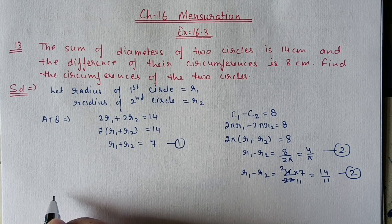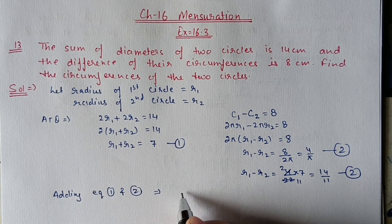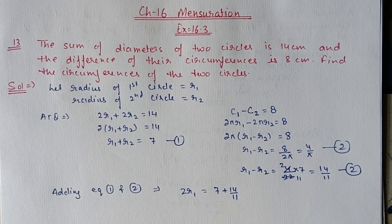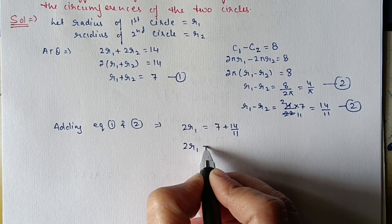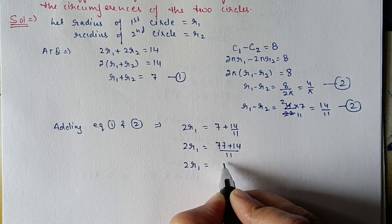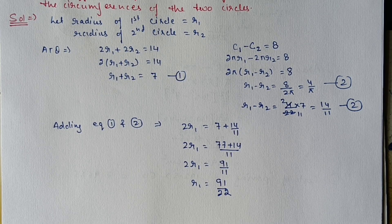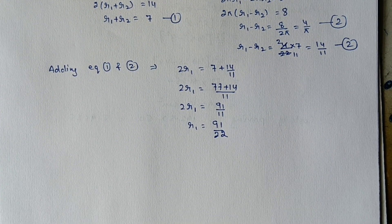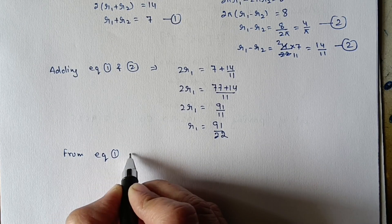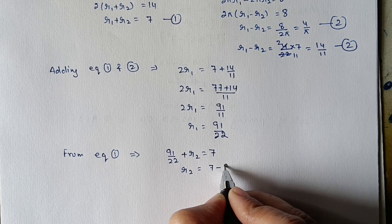Adding equation 1 and equation 2: r1 + r2 plus r1 − r2 gives 2r1, and the r2 terms cancel out. Right side: 7 + 14/11, taking LCM gives 77 + 14 upon 11 = 91 upon 11. So r1 = 91 upon 22. Substituting into equation 1: 91/22 + r2 = 7, so r2 = 7 − 91/22.